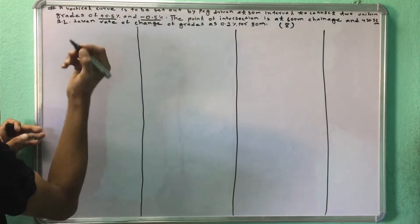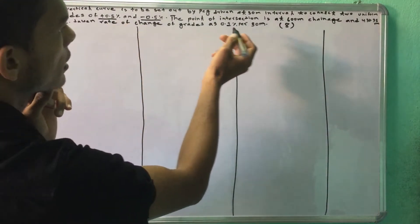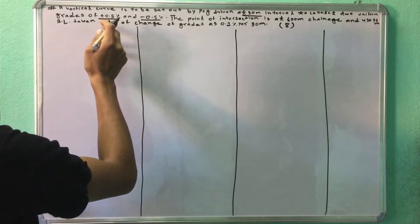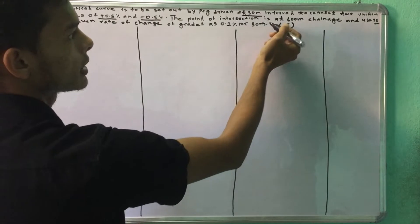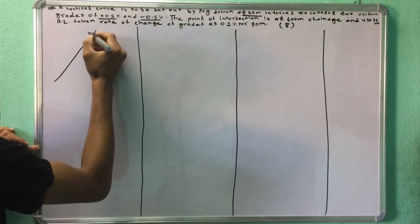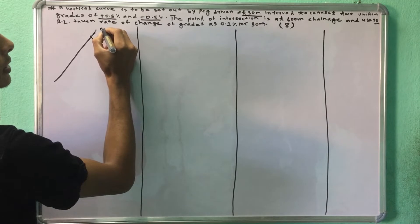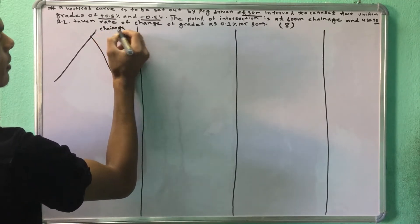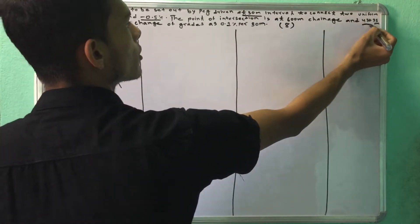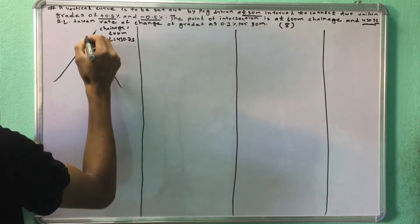Now we have to consider how much — the figure is complete. The vertical curve is 30 meters. The figure is the first grade plus 0.5, minus 0.5 percent. The intersection is at 6. The square change is 34.75.